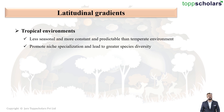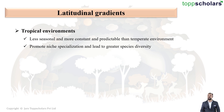Let us understand the term niche specialization. If any organism is given a constant temperature, a constant supply of water, and a constant and predictable environment, that organism develops special characters which are perfectly adapted to the environment. This organism will slowly become the master of its habitat and will specialize the niche. When many organisms do this, it leads to greater diversity in species.